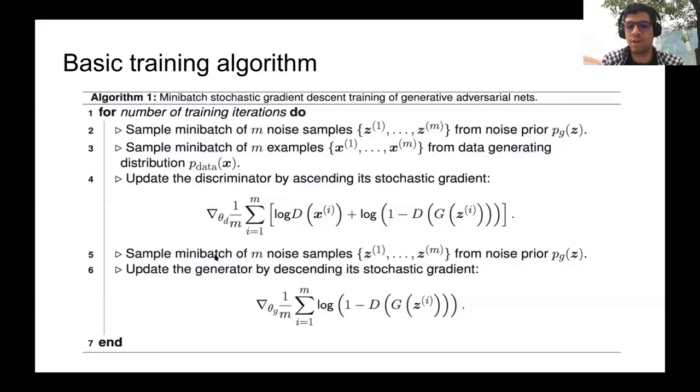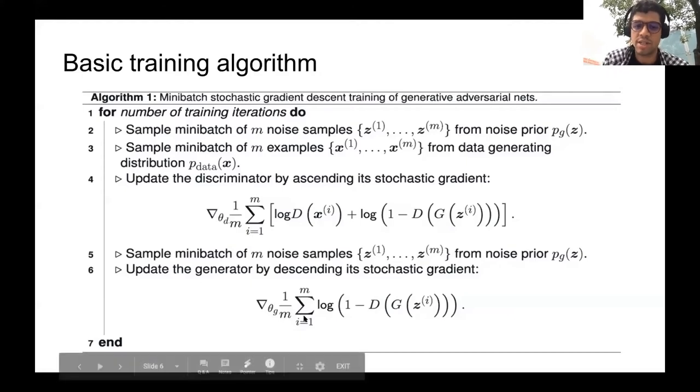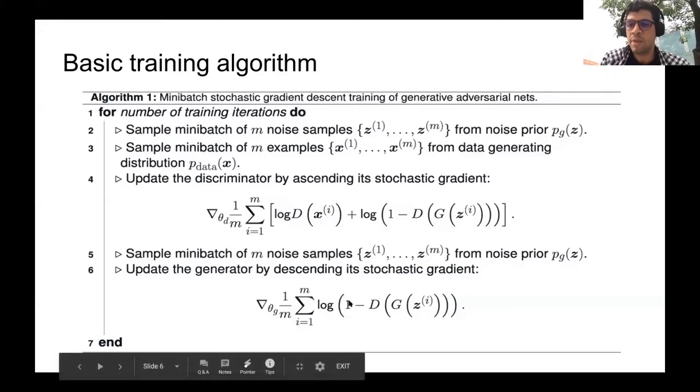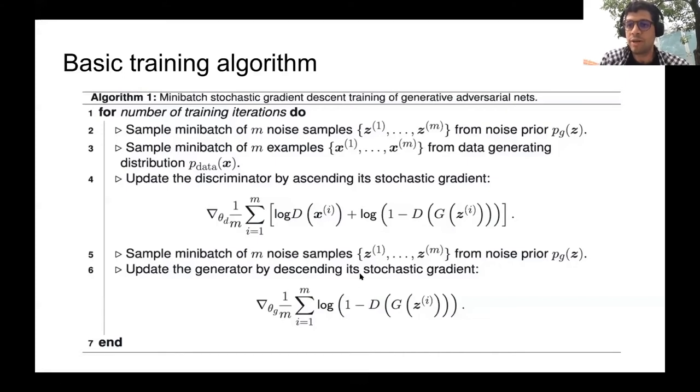And then next we sample another mini batch of m noise samples from the prior distribution and update the generator by descending its stochastic gradient descent as given in this expression. In Ian Goodfellow's paper, he mentions that on the discriminator update, we should update it until it reaches a stationary point of the minimax game objective. However, in practice, he saw that only one step is sufficient to guarantee convergence.